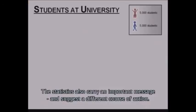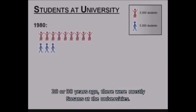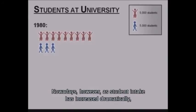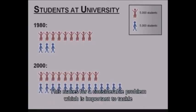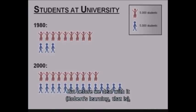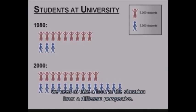The statistics also carry an important message and suggest a different course of action. Twenty or thirty years ago, there were mostly Susans at the universities. Nowadays, however, as student intake has increased dramatically, the Roberts now outnumber the Susans. This makes for a considerable problem which is important to tackle for any responsible modern society. But before we deal with Robert's learning, we need to take a look at the situation from a different perspective.